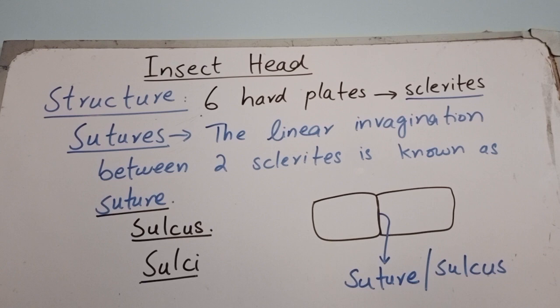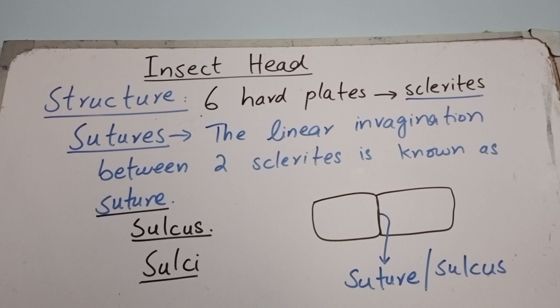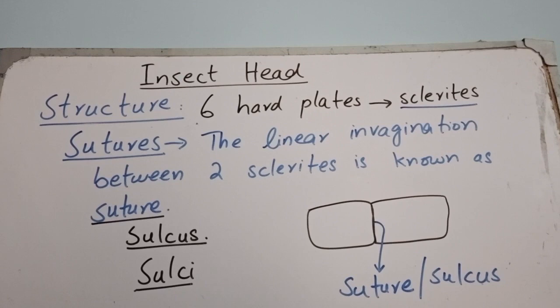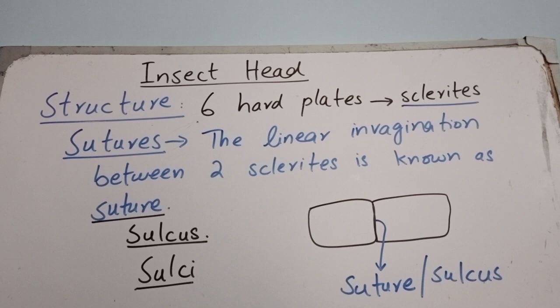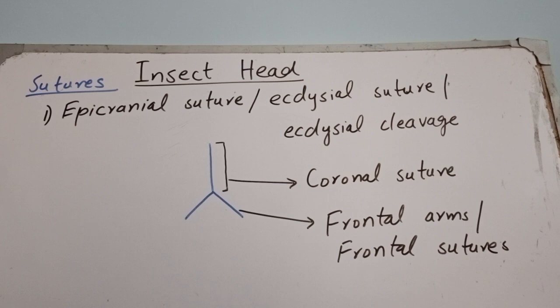The linear invagination between two sclerites is known as a suture, sometimes also called a sulcus (plural: sulci). A suture or sulcus is a fine groove that separates or differentiates two sclerites. There are different sutures in the insect head, named according to the sclerites they lie between.